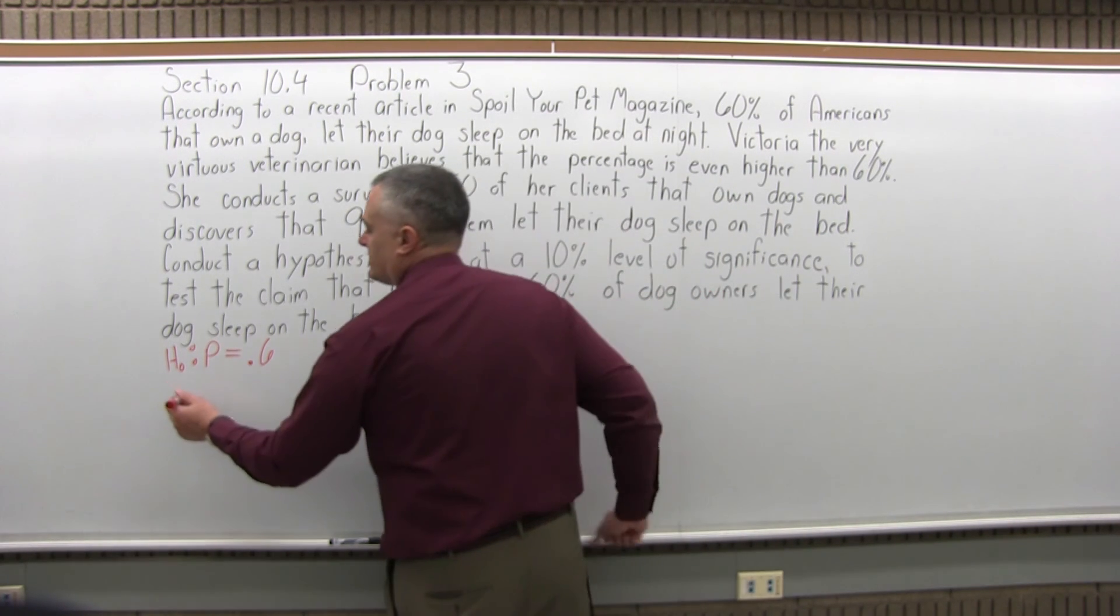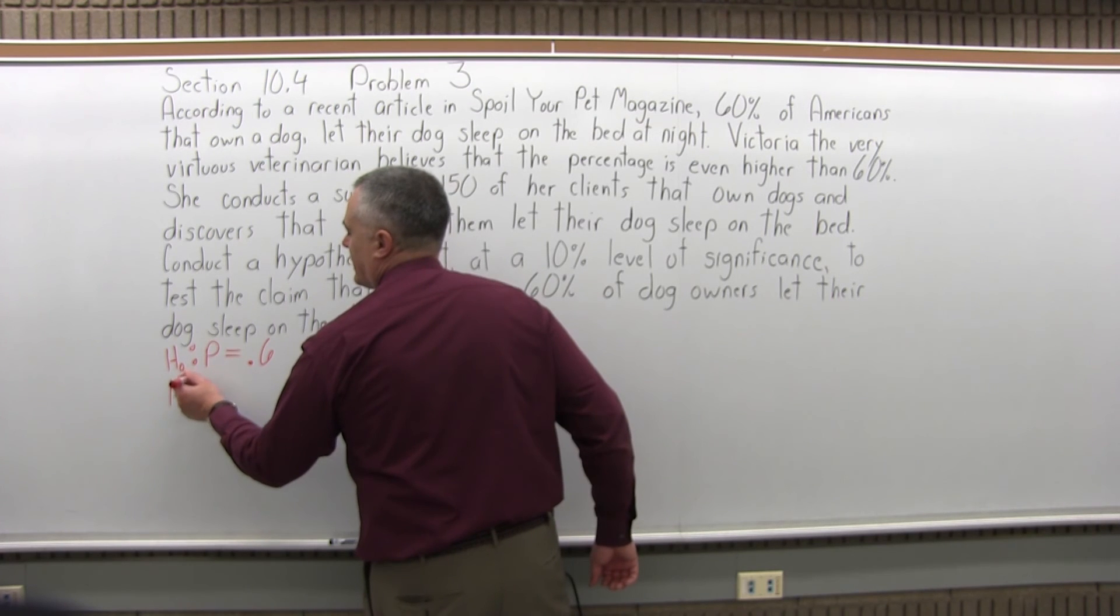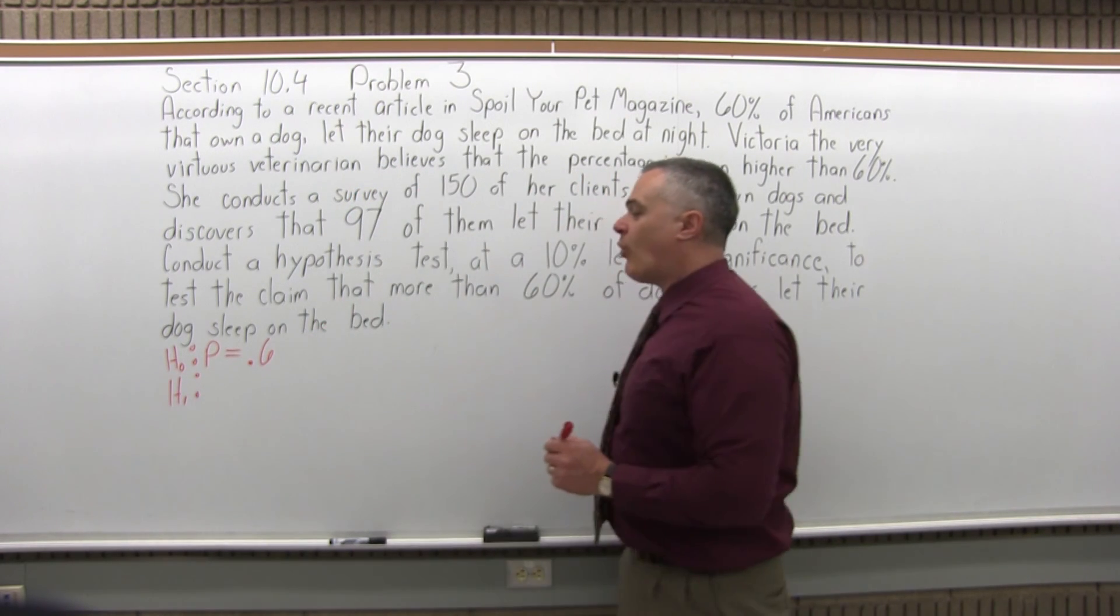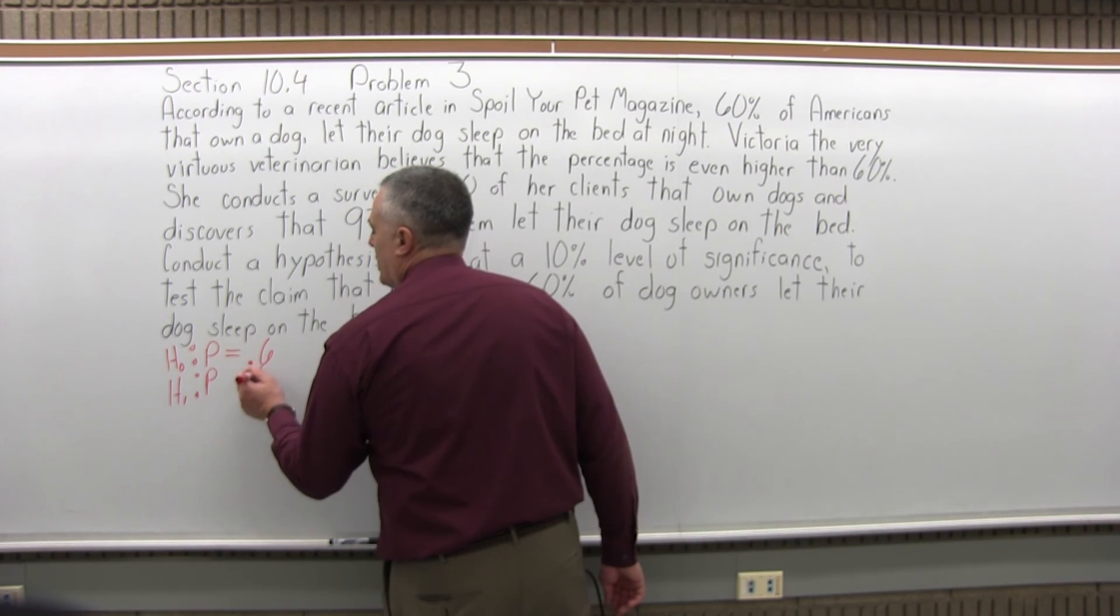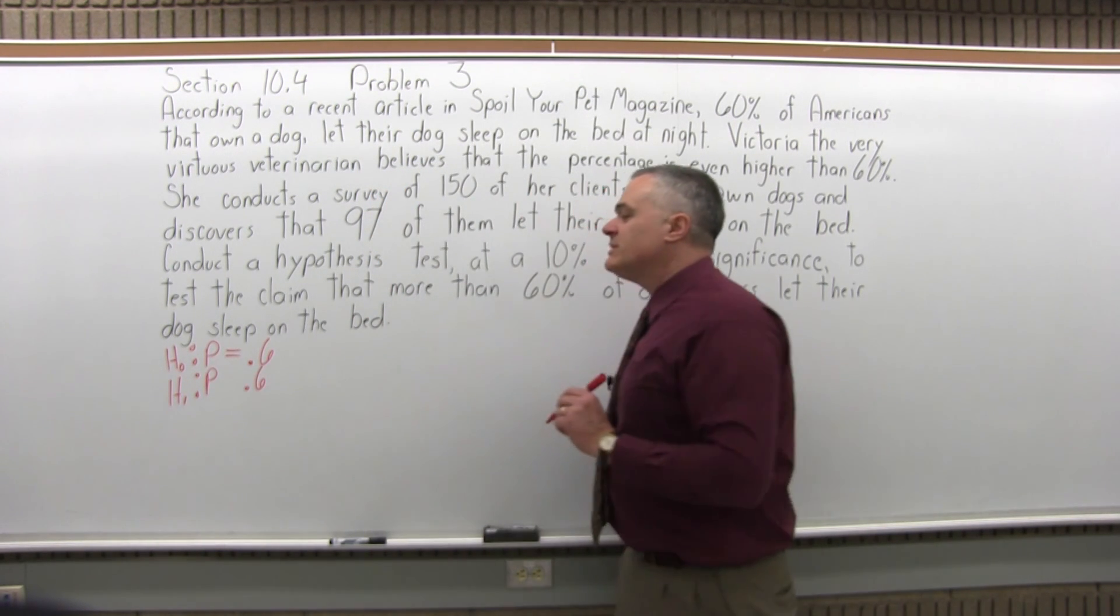Next, the second step is we want to state the alternate hypothesis. So it's capital H with a subscript of 1. It's still going to have the p, the same number 0.6, but a different symbol.